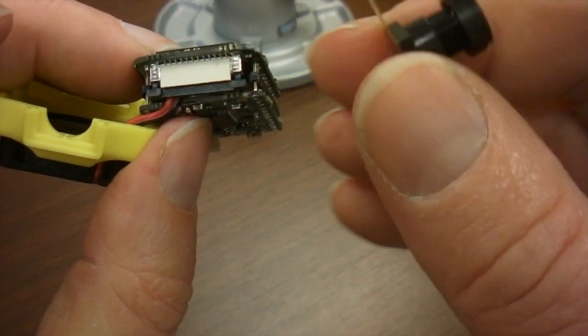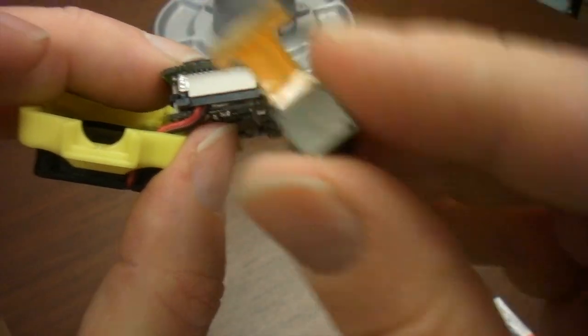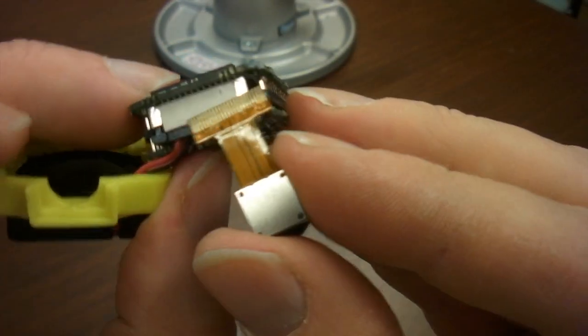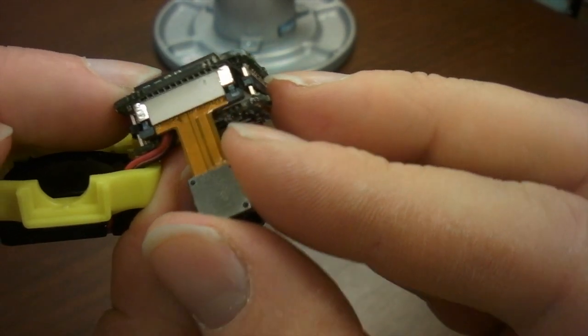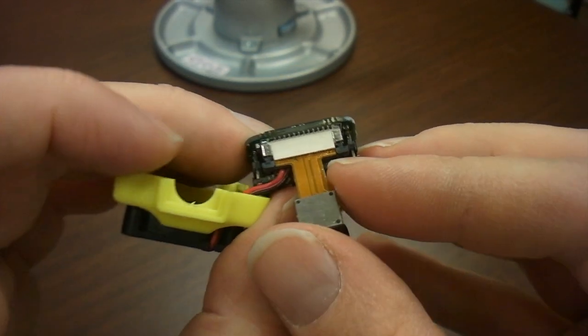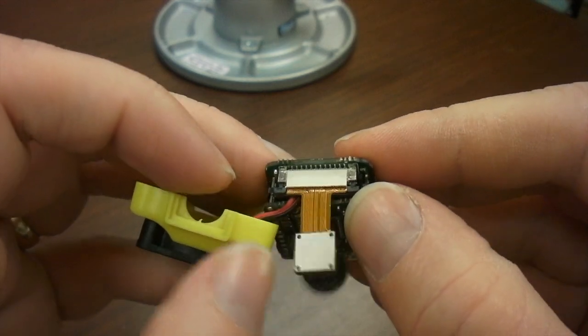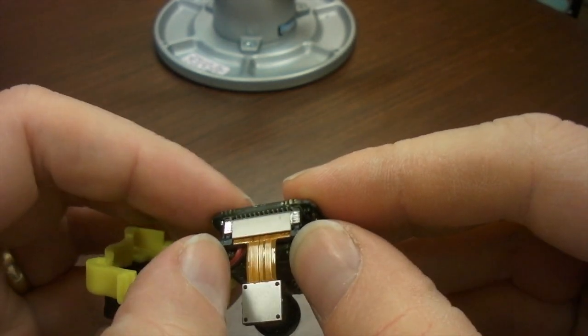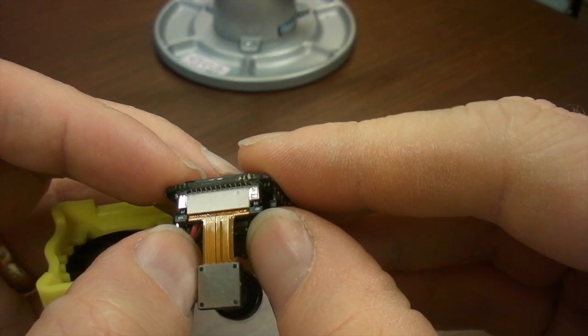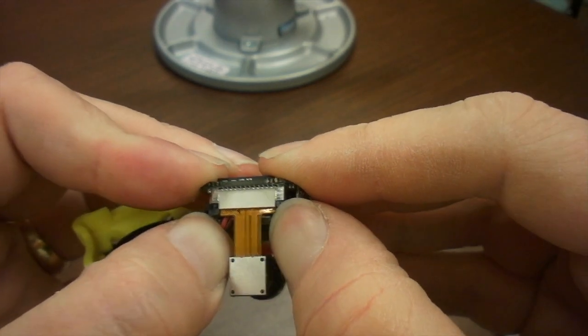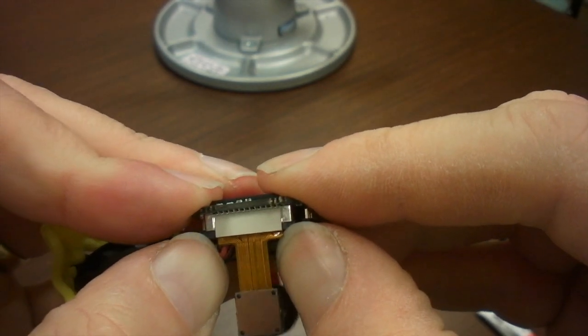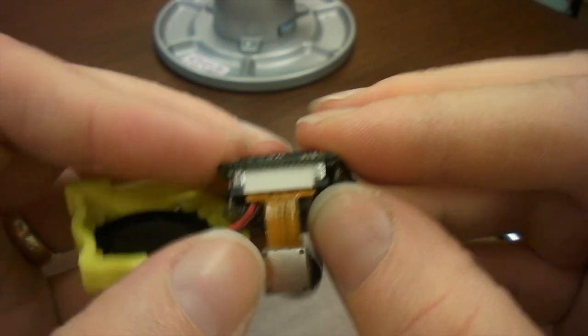And now we are going to insert the new one. The golden contacts should be facing you when you are holding the camera in this way. Make sure it is fully inserted, and then push on the two black sides of the connector. Try to push on both of them at the same time so that the little black piece slides back into the connector.